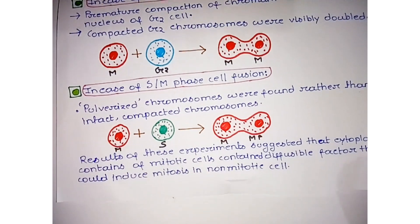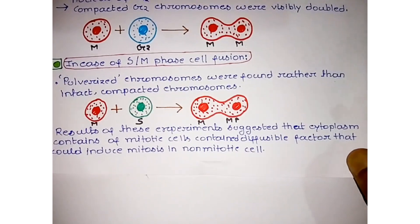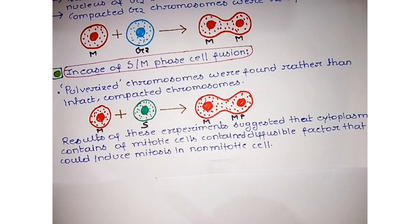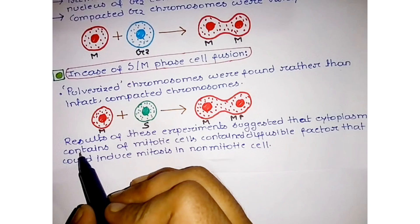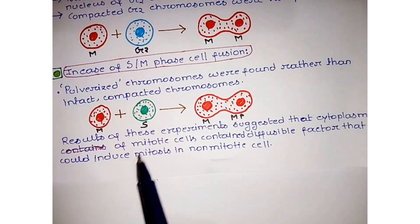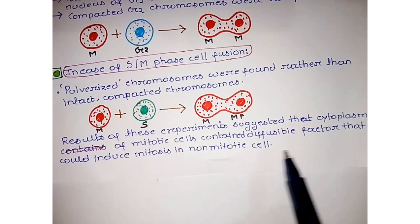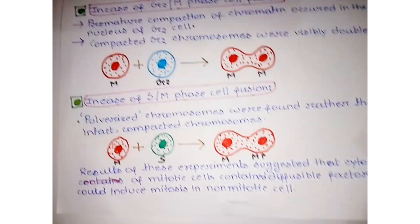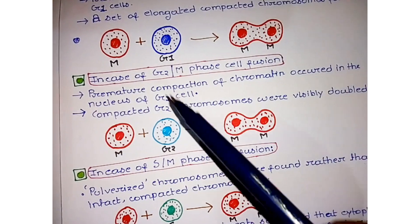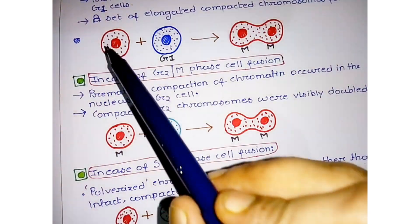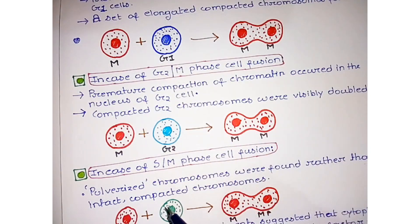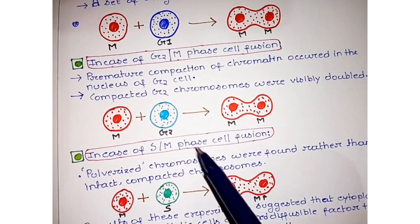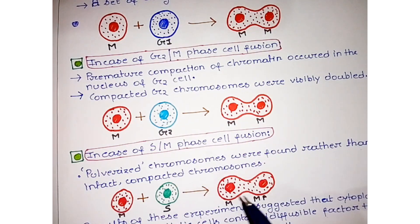The result of this experiment suggested that the cytoplasm of mitotic cells contains diffusible factors that could induce mitosis in non-mitotic cells. We can conclude that there is some factor present in M phase that induces an effect on G1, G2, or S phase cells, causing the transformation of G1, G2, and S phase into M phase.